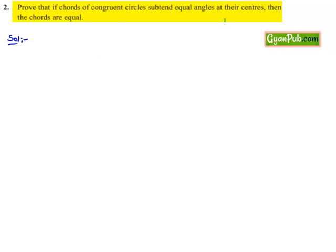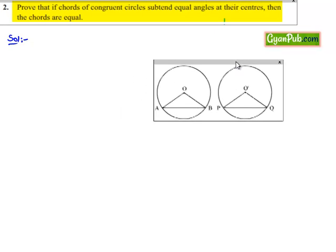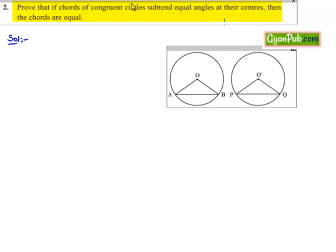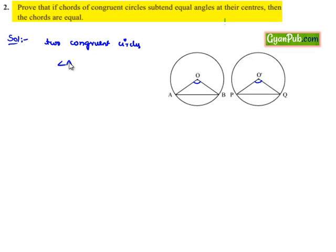In the solution, let us consider two circles with centers O and O' respectively, and let AB and PQ be the chords in the two congruent circles which subtend equal angles at the center, that is, angle AOB is equal to angle PO'Q. So the given information is: two congruent circles with centers O and O', and the angles subtended by the chords at the centers are equal.